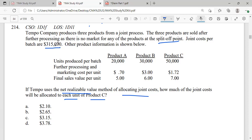Joint cost per batch are $315,000. The split-off point is like this: 20,000, 30,000, 50,000 units. But here comes further production cost—further production cost per unit is $0.70 for Product A, $3 for Product B, and $1.72 for Product C. Now when we have all these costs, we can find out the further cost respective to them and their final sales value, because we need to find it on the net realizable value.